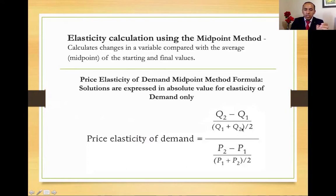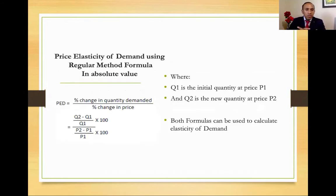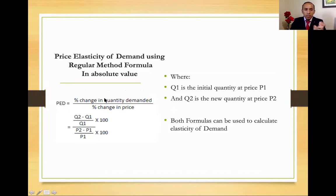We take this change in quantity and divide it by the price change — the new price P2 minus P1 — divided by the average value of prices. When we compute this method, we get a mathematical solution to help explain consumer behavior through calculations and give meaning to elasticity. The secondary formula used is the regular method formula. Both use the absolute value. The main difference is that the price elasticity of demand is the percent change in quantity demanded over the percent change in price, but we're not taking the average values as in the midpoint method.